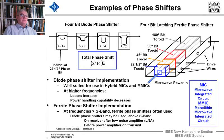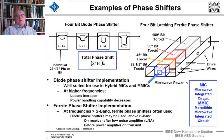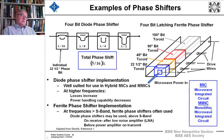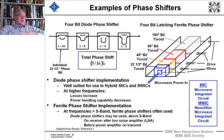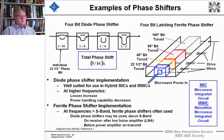Two different technologies are very important here: microwave integrated circuit technology (MIC) and monolithic microwave integrated circuit technology (MMIC), where you're making microwave integrated circuits all as one chunk rather than assembling many little pieces together. At frequencies greater than S-band, ferrite phase shifters are often used. Diode phase shifters may be used above S-band on receive, after the low-noise amplifier (LNA), and before the power amplifier on transmit.